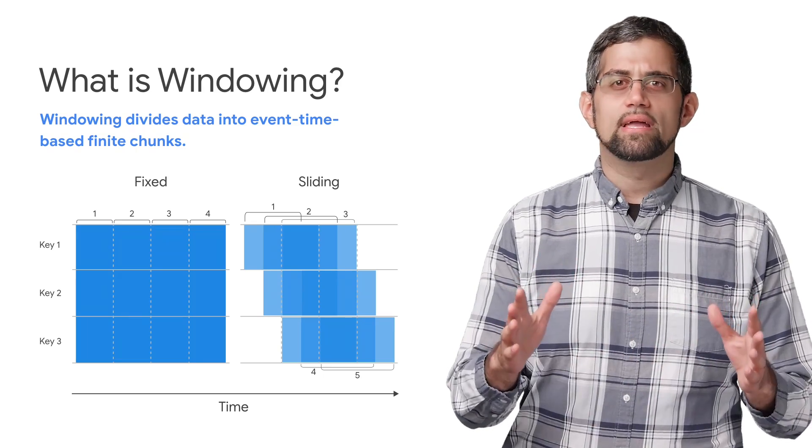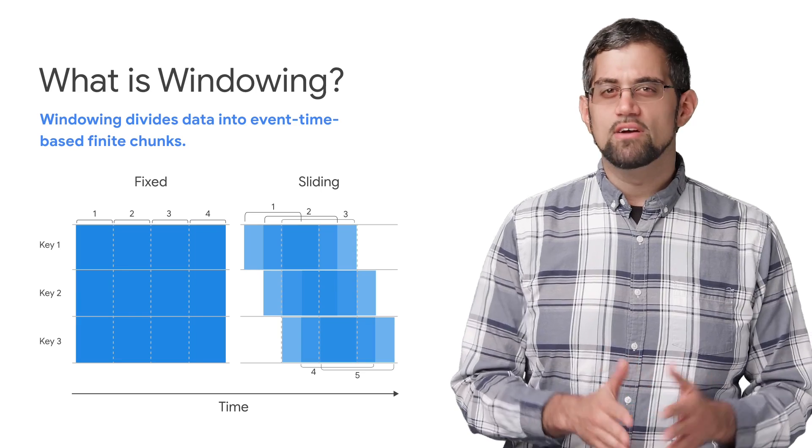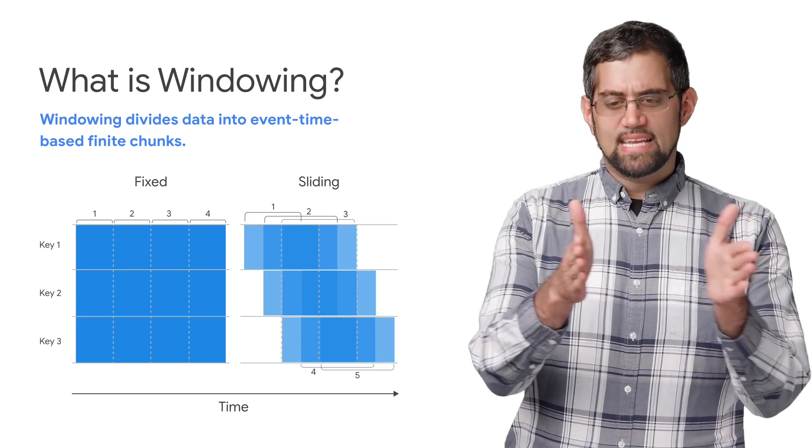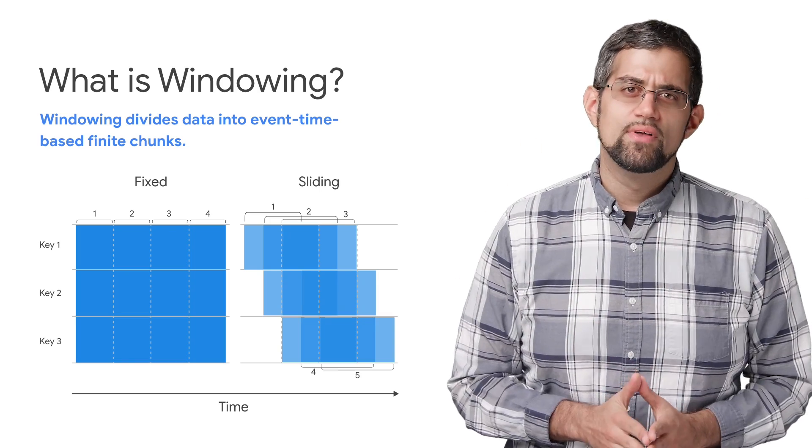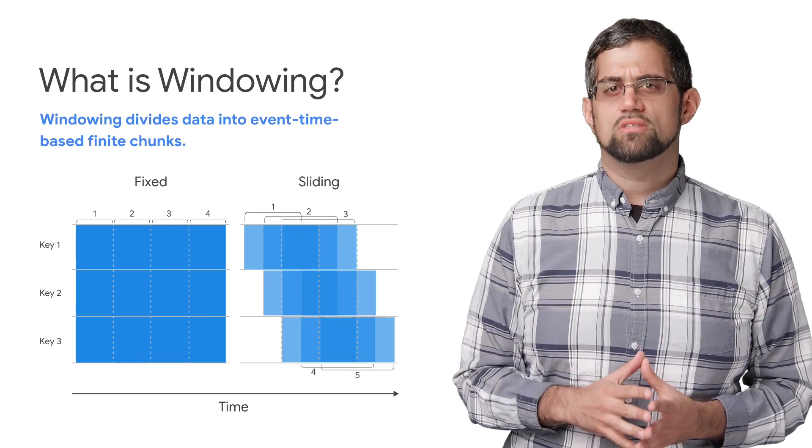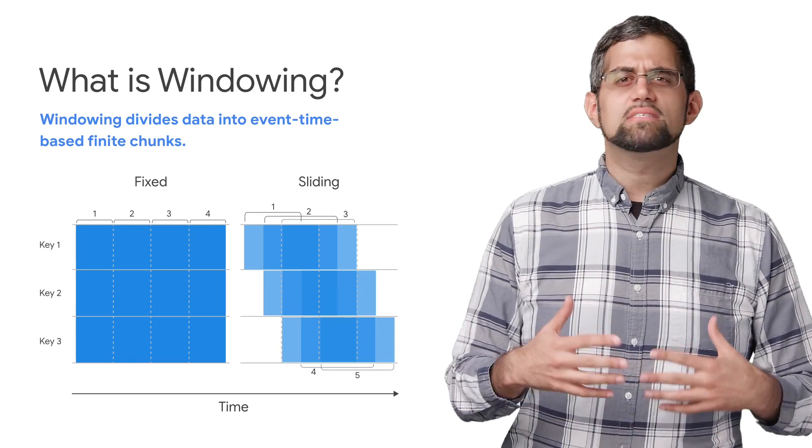This is called windowing, and we can do this by dividing our events into fixed time intervals, sliding time intervals, or based on when a user is active and sending events. So knowing some of the challenges that make streaming analysis unique, let's implement an example.